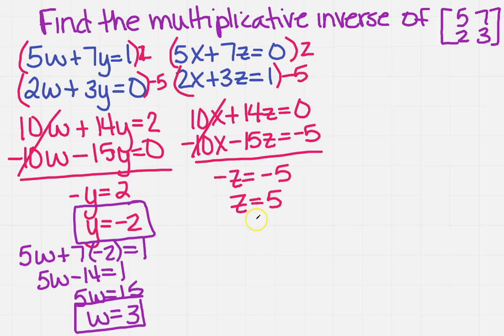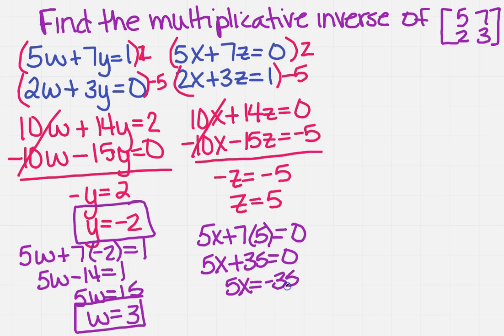So I have the Z. Now I need to find the X. So I'm going to plug that back in. So I'm going to get 5X plus 7 times 5 equals 0. I'm going to get 5X plus 35 equals 0. 5X equals minus 35. And then I've got X equals minus 7. So now I've got those two values.